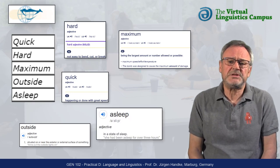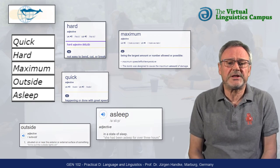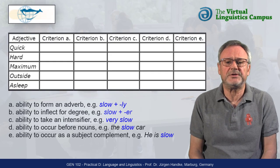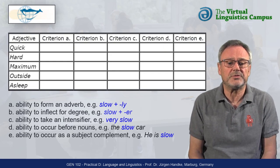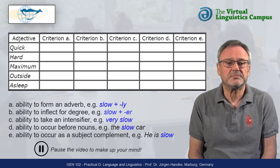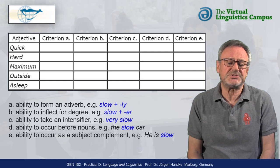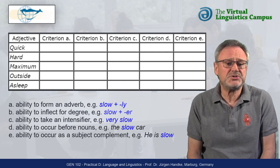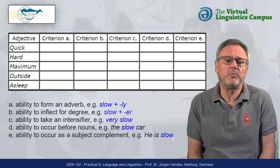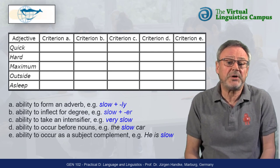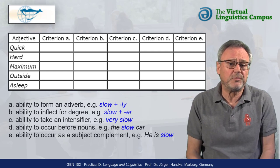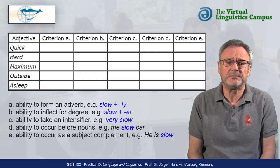But what does it mean for a word to be an adjective? Apply these criteria to each word and you will find out. On the basis of your analysis, what can you say about the homogeneity of adjectives, and perhaps of word classes in general?